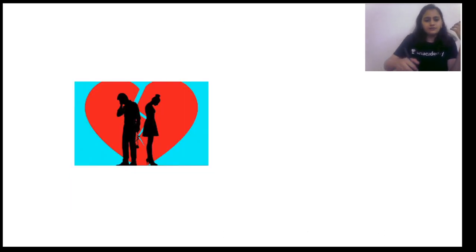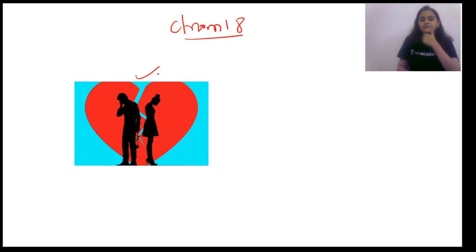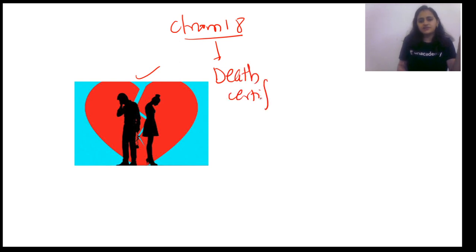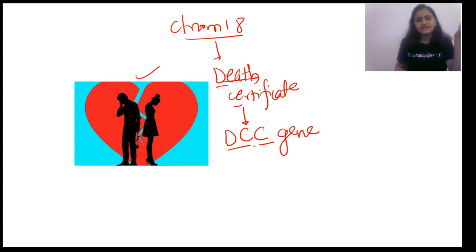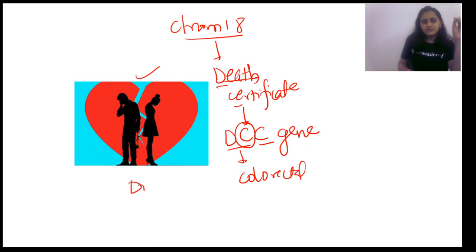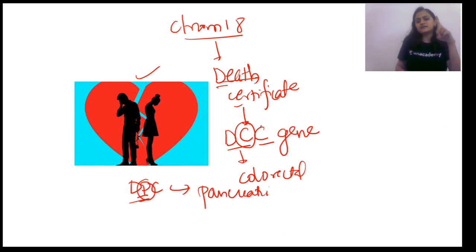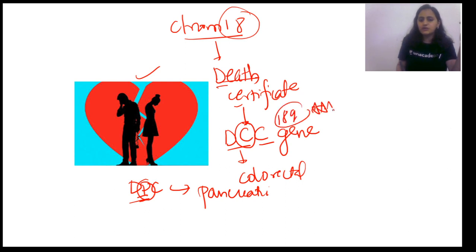At age 18 there is a breakup, representing chromosome 18. A breakup feels like the end of life — a death certificate — and that tells us the gene is the DCC gene: Deleted in Colorectal Carcinoma. Similarly, DPC gene is Deleted in Pancreatic Carcinoma. DCC is chromosome 18q — frequently asked. So 18 is the breakup, death certificate, DCC gene, colorectal carcinoma, located at 18q.